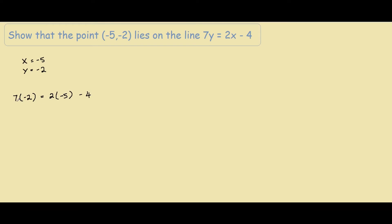So on the left hand side we have 7 times negative 2, negative 14. And on the right hand side we have 2 times negative 5, which is negative 10, minus 4. So as you can see, both sides equal negative 14.